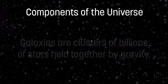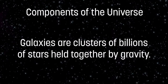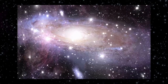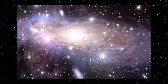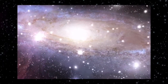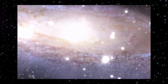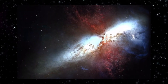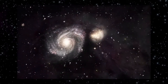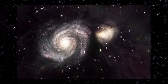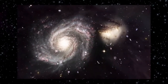We'll start with galaxies. Galaxies are clusters of billions of stars held together by gravity. The basic structure of matter in the universe is the galaxy. Galaxies are collections of billions of stars, but in addition to that, gases and dust — all held together by gravity. An average galaxy has somewhere over 100 billion stars, and there are probably over 100 billion galaxies.